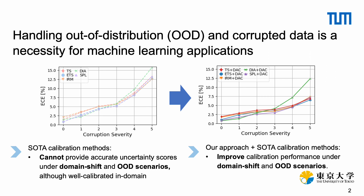Although current state-of-the-art calibration methods exhibit effective calibration within their designed domains, they fall short in accurately estimating uncertainty scores under domain shifts and for OOD scenarios. To address this gap in calibration performance,